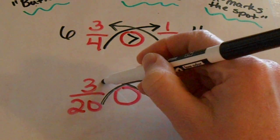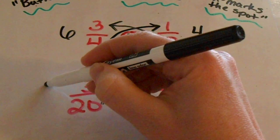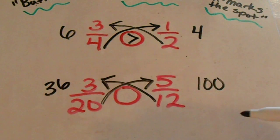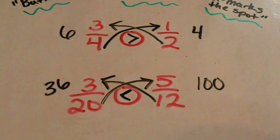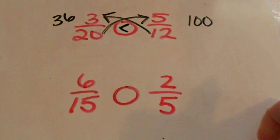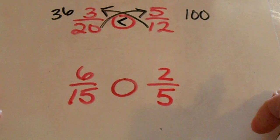Then I'm going to cross this way. Twelve times three is thirty-six, so since I have one hundred is bigger than thirty-six, five twelfths is greater or three twentieths is less than five twelfths. It even works when you have fractions that are equivalent.